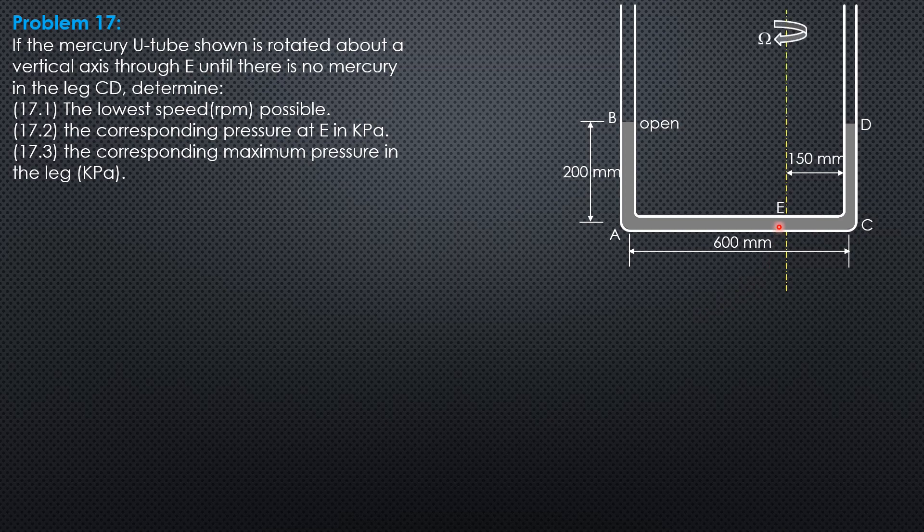So this is the figure, this is E, and this time it is rotated about a vertical axis through E such that no mercury is left in leg CD. So such is the case, then the imaginary parabolic surface has its vertex on the axis of rotation and it should pass through C. So this mercury in CD will go down and in AB it will rise by also 0.2 meter, so the height of mercury in AB should be 0.4 meter.